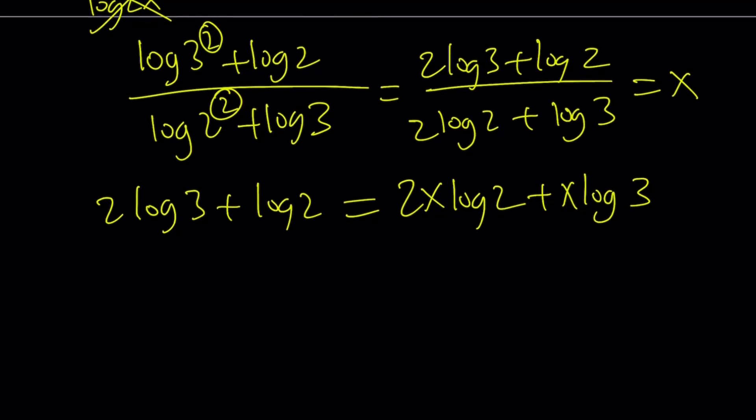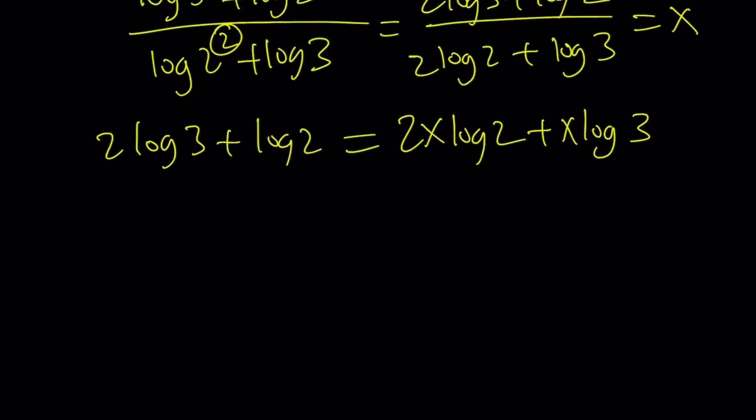So from here, here's my goal. I distributed the x over and I kind of want to separate the log 3 and log 2 and then I want to get the ratio. Make sense? I have a test.